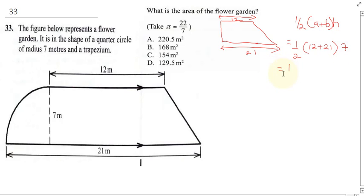This is the same thing as half times 12 plus 21, which gives us 33 times 7. When you multiply this you get 33 times 7 is 231 divided by 2, which gives us 115.5 meters squared.